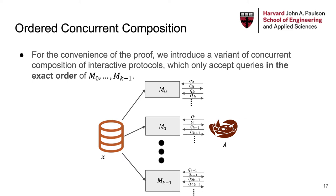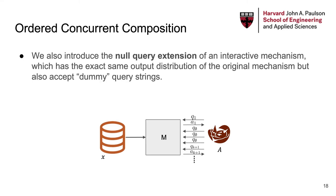For the convenience of our proof, we introduce a variant of concurrent composition of interactive protocol modules, which only accepts queries in the exact order of the k mechanisms M0, M1 to Mk-1. Like the first query is sent to M0, the second to M1, the third to M2, etc. After Mk-1, the next query goes to M0 again. We also introduce a special kind of interactive mechanism, the null query extension. The null query extension of a mechanism has the exact same output distribution as the original interactive session, except that it will accept and ignore all null queries, and one will not get any answer from those queries.